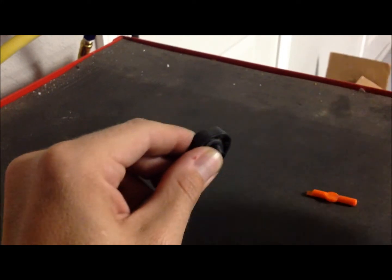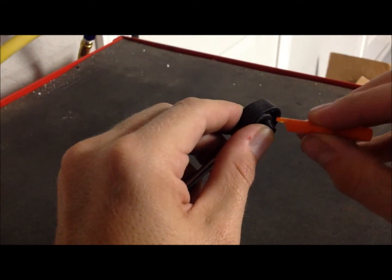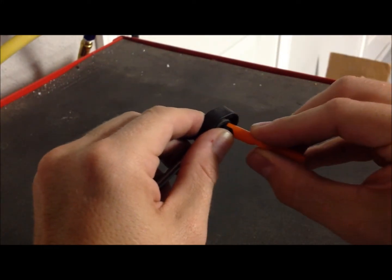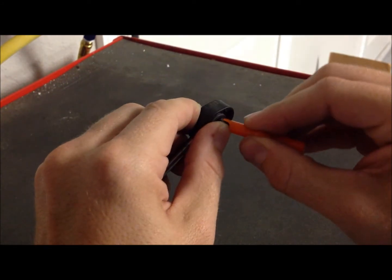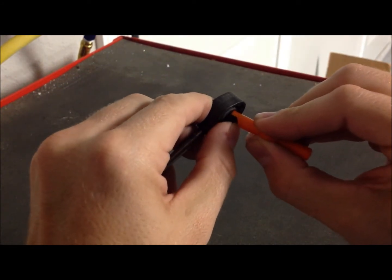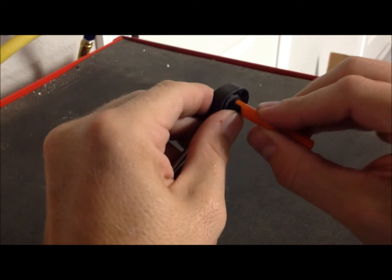Once you get it set up, use the cupped end of the installation tool, sort of like a shoehorn, to get the rest of the bushing into the hole.